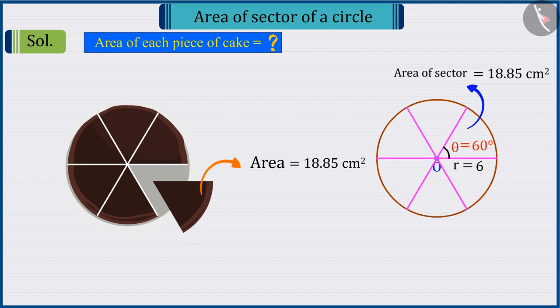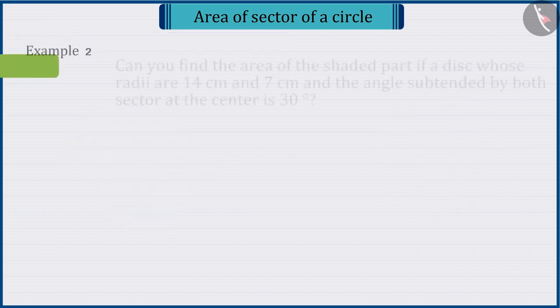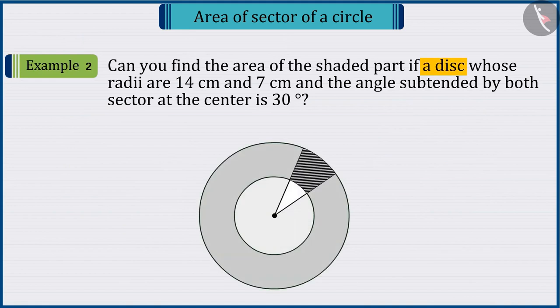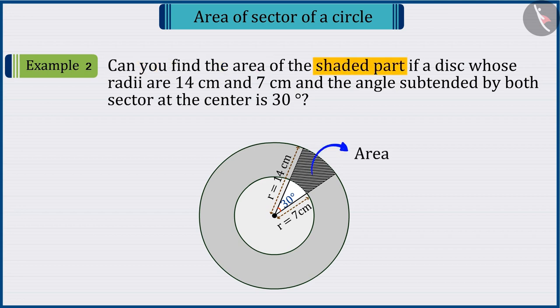Let's look at another example. There is a disc, whose radii are 14 centimeters and 7 centimeters, and the angle subtended by both sectors at the center is 30 degrees. So, can you find the area of the shaded part of the circle? Come, let's see.